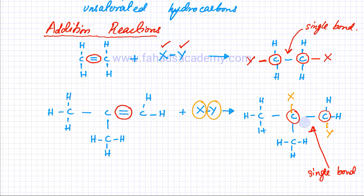The two carbon atoms that lose one bond when the double bond is converted to a single bond need to complete their bonds — so one bonds with X and the other bonds with Y. This is the general mechanism of an addition reaction, and we're going to go into a lot of detail. There are three or four different types of addition reactions, and we're going to study the conditions now.